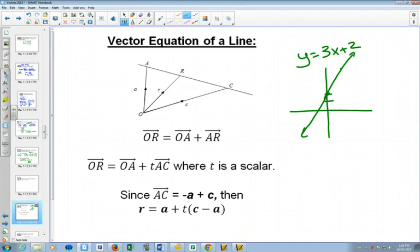You'd go over 1, up 3, and there you'd have your line. Now the idea with vectors is that every point on the line is a position vector. So the point (0, 2), well, that's this position vector. And this point right here, which is (1, 5), is this position vector.